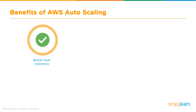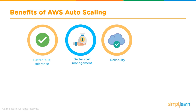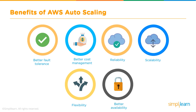The benefits of autoscaling include: better fault tolerance — you can create clone copies of servers so you don't redeploy applications repeatedly; better cost management — scalability is decided automatically based on threshold parameters; reliability with notifications to email or cell phone; scalability with scale-up and scale-down capability; flexibility to schedule or fix instance count on the fly; and better availability.